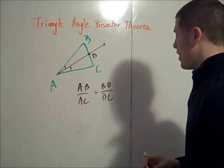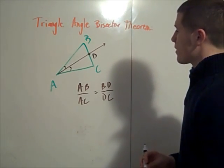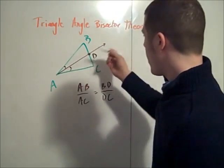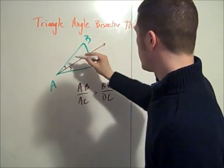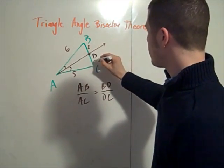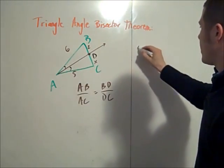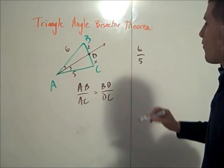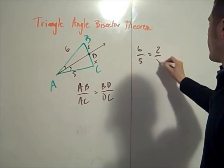So we can use this theorem in the following way. If this is equal to 6, and this is 5, and this is 2, and this is x, you can say that 6 over 5 is equal to 2 over x.